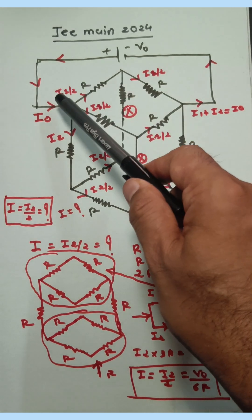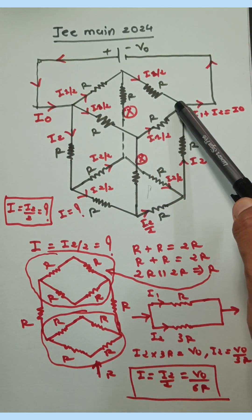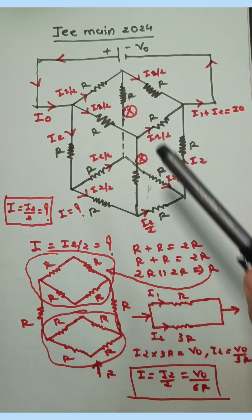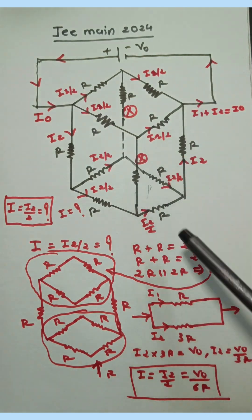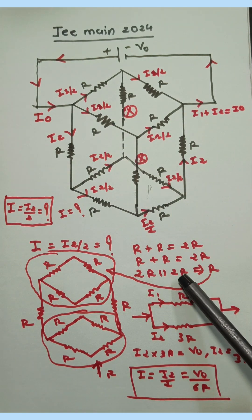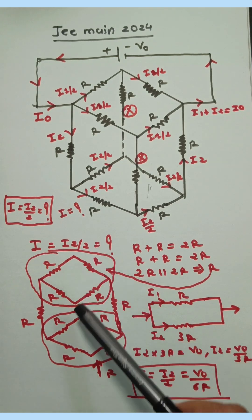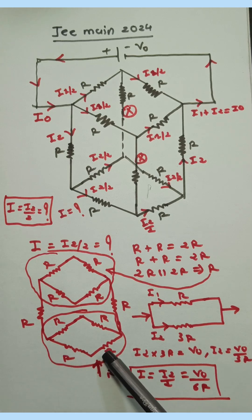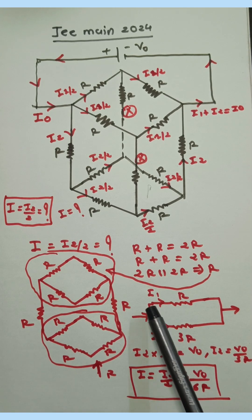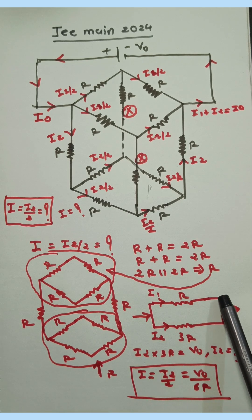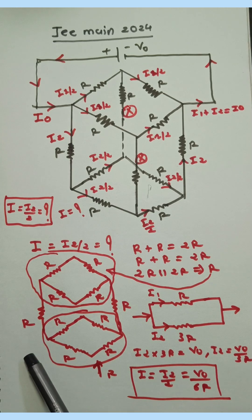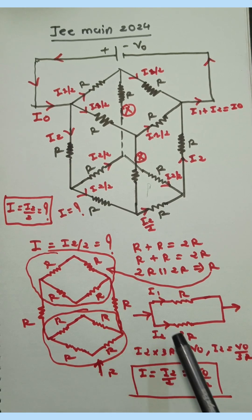Now see here: R and R in series gives 2R, and the other branch also R and R in series gives 2R. These two 2R resistances in parallel give an equivalent resistance of R. Similarly, in the bottom portion, R plus R is 2R, R plus R is 2R, and 2R parallel 2R gives equivalent resistance R. So the total resistance is R plus R plus R plus R, which equals 3R.